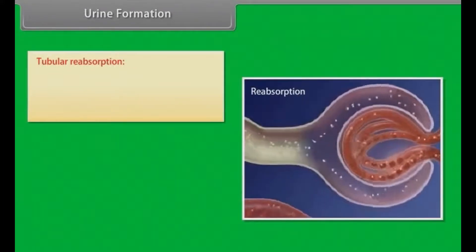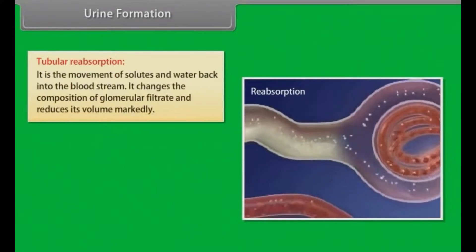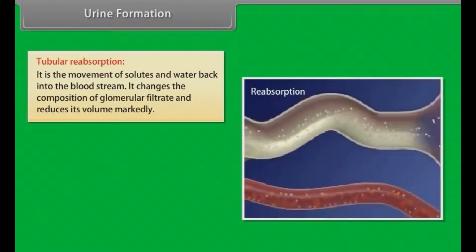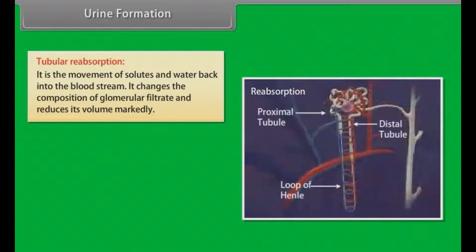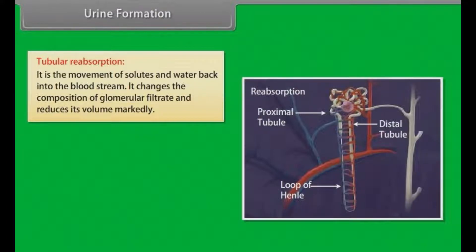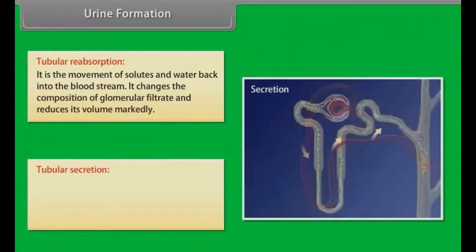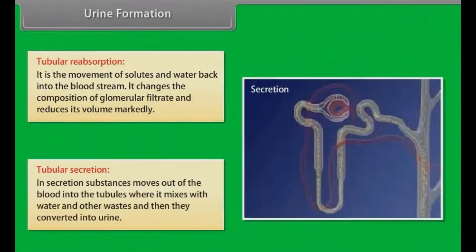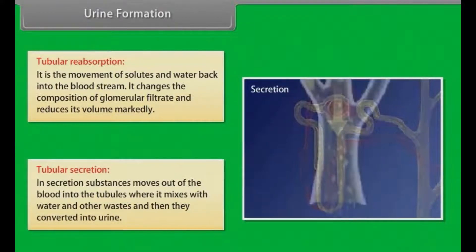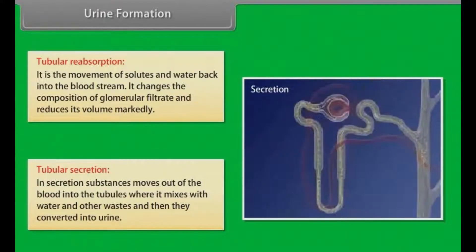Second is tubular reabsorption: it is the movement of solutes and water back into the bloodstream, which changes the composition of the glomerular filtrate and reduces its volume markedly. Third is tubular secretion: substances move out of the blood into the tubules, where they mix with water and other wastes and are then converted into urine.